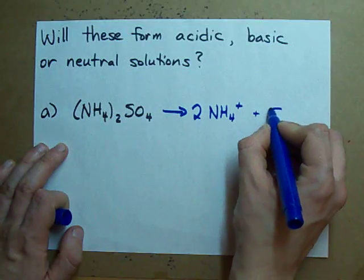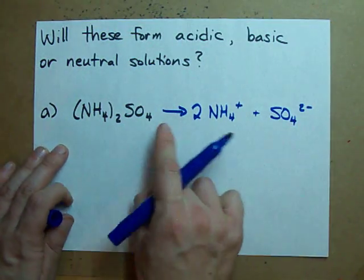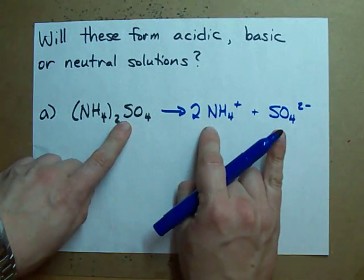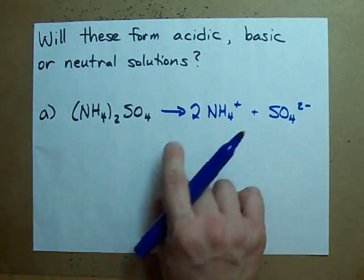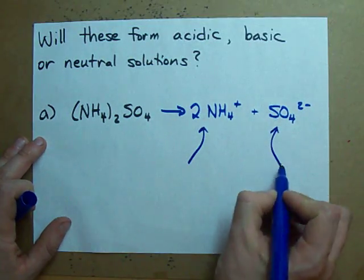And it makes an SO4 2- ion. Notice that I broke it up into its constituent ions. Now, consider each of these ions separately.